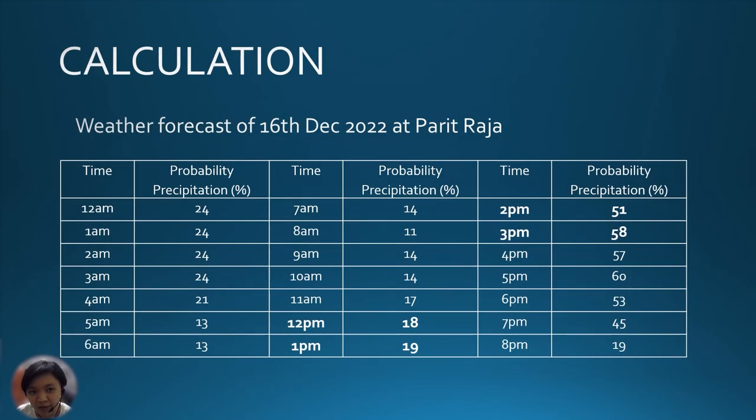I am Jovita with matrix number AF210088. I will talk about the calculation of our project. This is the data of the weather forecast of 16 December at Batu Pahat, taken from weather.com. We want to calculate the probability precipitation at 1:30 pm by using cubic approximation, so 4 data are used, which is 12pm, 1pm, 2pm and 3pm.